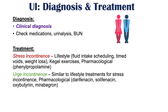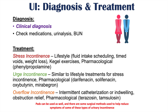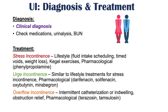For urge incontinence, lifestyle treatments are similar, but pharmacological treatments differ. Medications for overactive bladder include darifenacin, solifenacin, oxybutynin, and mirabegron. For overflow incontinence, because there are issues with voiding — either initiating or maintaining urinary output — intermittent or indwelling catheterization is one treatment option. If an obstruction is identified, obstruction relief is important. Pharmacological treatments include terazosin and tamsulosin, which help reduce urinary retention.